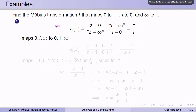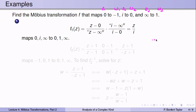Let's look at an example. Suppose we wanted to find the Möbius transformation that maps 0 to −1, i to 0, and ∞ to 1. So z1 = 0, w1 = −1, z2 = i, w2 = 0, z3 = ∞, and w3 = 1. I want to show you two different ways of getting there. The first way is to use the proof of the previous fact — construct a mapping f1 that maps the z's to 0, 1, and ∞, and construct a map f2 that maps the w's to 0, 1, and ∞. Here is the mapping f1 that maps 0, i, and ∞ to 0, 1, and ∞, using exactly the mapping we constructed before.